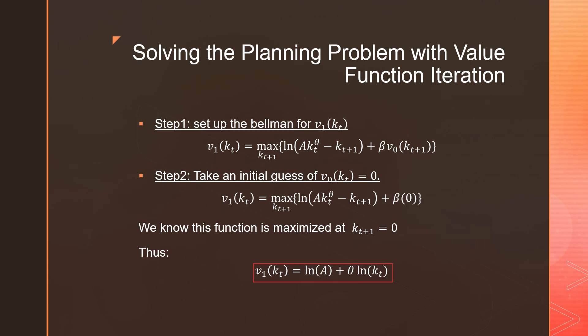So let's start from step one. Step one, set up your Bellman equation for v₁. So bam, we have it right there. Step number two is that we're going to take our initial guess for v₀(kₜ) equals zero. So again, we're just iterating this one period forward. And we're just going to plug in zero right there. So we have to maximize this problem here. So clearly, we can see that this function is maximized where kₜ₊₁ equals zero.